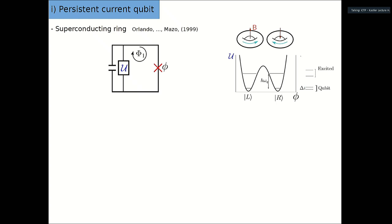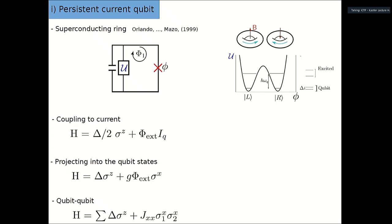We have persistent current qubits — a loop with Josephson junctions. For a persistent current qubit, you have a potential with left and right wells corresponding to persistent currents in different directions, and a qubit gap. As a simple example of how to induce magnetic interaction: you write the model with tunneling between the wells, then couple the current to an external flux. Projecting this operator onto the qubit basis gives you sigma x. If you want to couple another qubit, the external field can be induced by mutual inductance from the other qubit, giving you another projected current operator.